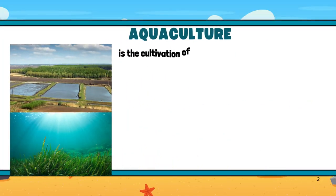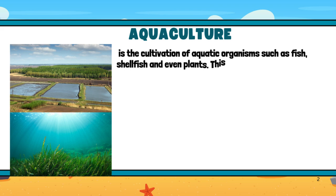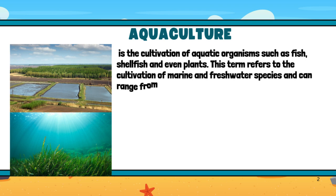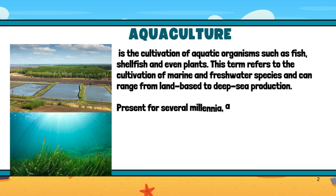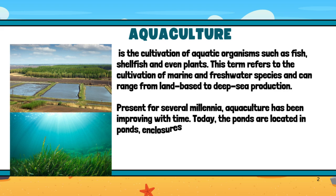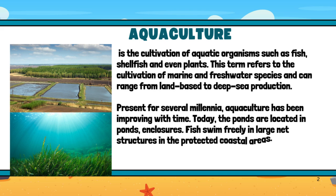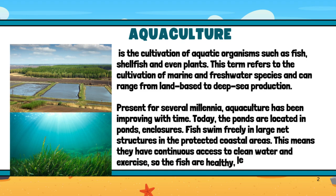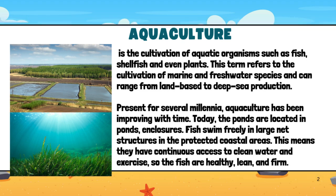Aquaculture is the cultivation of aquatic organisms such as fish, shellfish, and even plants. This term refers to the cultivation of marine and freshwater species and can range from land-based to deep-sea production. Present for several millennia, aquaculture has been improving with time. Today, fish are located in ponds and enclosures, swimming freely in large net structures in protected coastal areas, giving them continuous access to clean water and exercise, so the fish are healthy, lean, and firm.